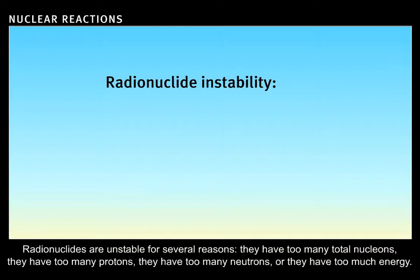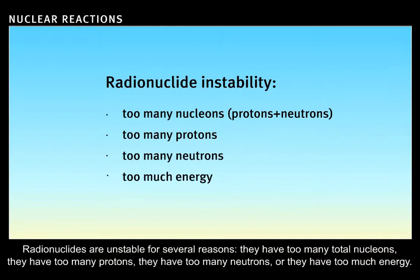Radionuclides are unstable for several reasons. They have too many total nucleons. They have too many protons. They have too many neutrons, or they have too much energy.